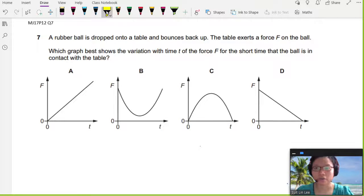Okay, in this question, you are given a rubber ball, and the rubber ball is dropped onto a table and it bounces back up. So this is a pretty familiar rebound question. A table exerts a force F on the ball. Which graph best shows the variation with time of the force F for the short time that the ball is in contact with the table?